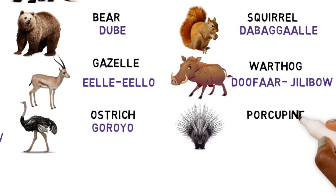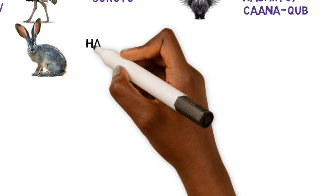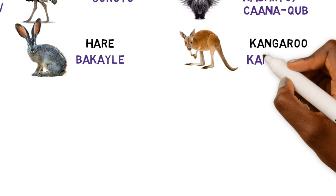An ostrich is Goroyo, while a porcupine is Kashito or Kanakub. A hare is Bakele, while a kangaroo is Kangaroo.